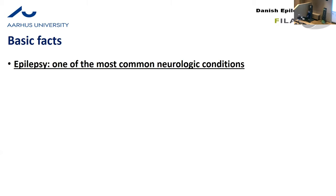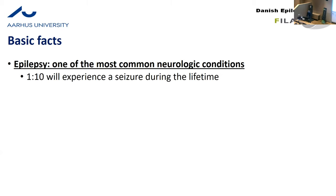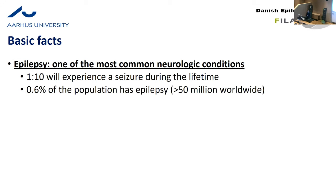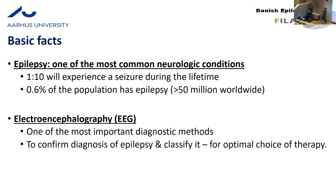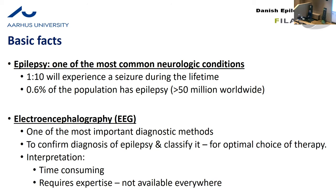Let's start with some basic facts about epilepsy for the sake of mathematicians. Epilepsy is one of the most common neurologic conditions. One in 10 of us will during our lifetime experience at least one seizure, and the prevalence of epilepsy in the general population is 0.6%, meaning that worldwide we have more than 50 million people with epilepsy. EEG electroencephalography is one of the most important diagnostic methods to confirm the diagnosis and to classify it for an optimal choice of anti-seizure medication. However, interpretation of EEG is time consuming and requires expertise not available everywhere.